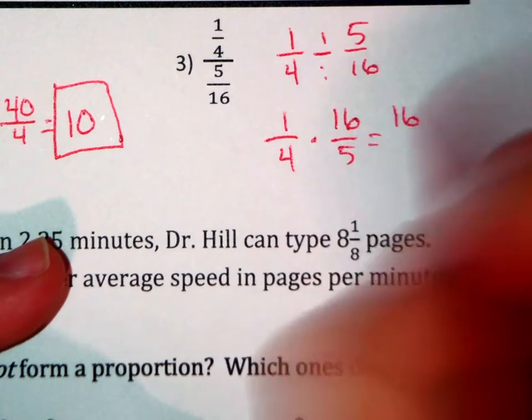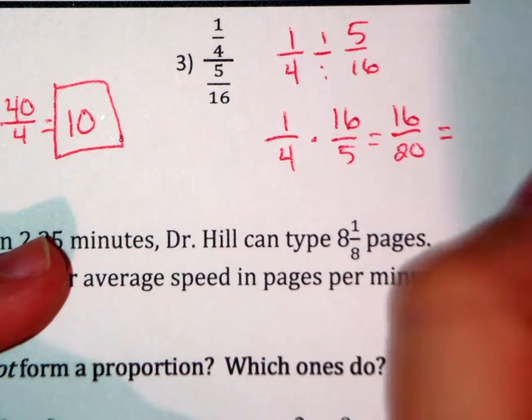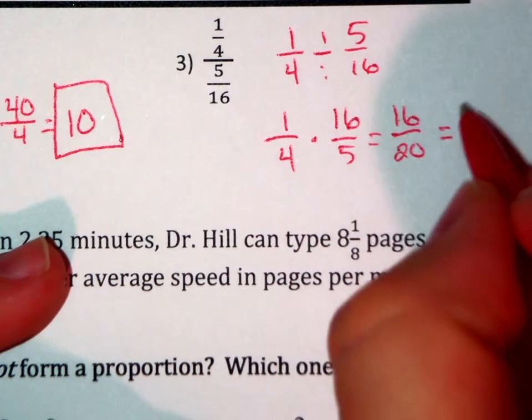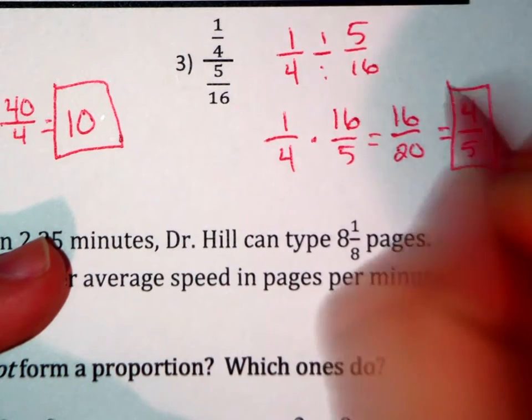1 times 16 is 16, 4 times 5 is 20. Simplify it, 4 goes into 16 4 times, 4 goes into 20 5 times, so our solution is 4 fifths.